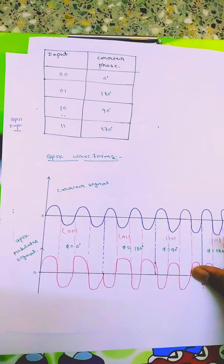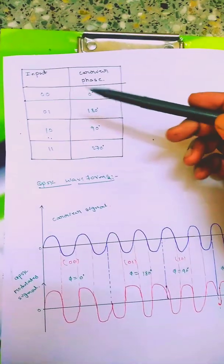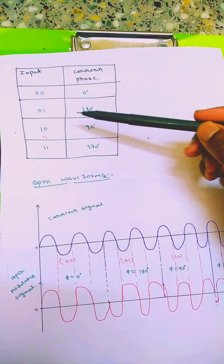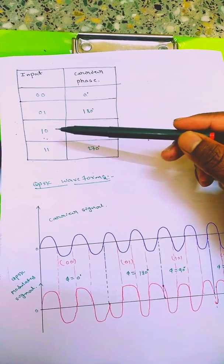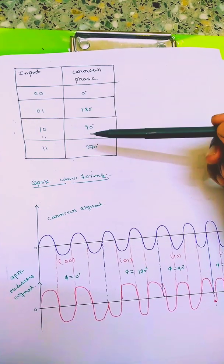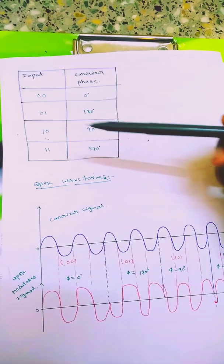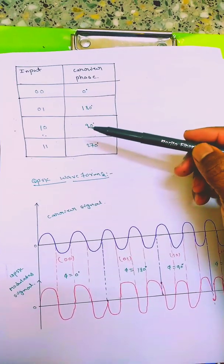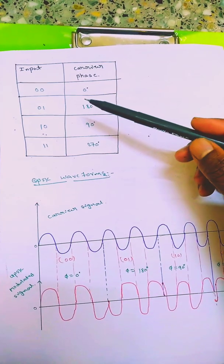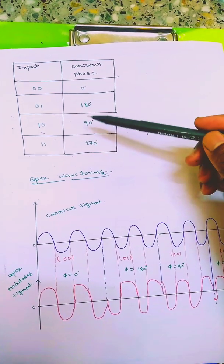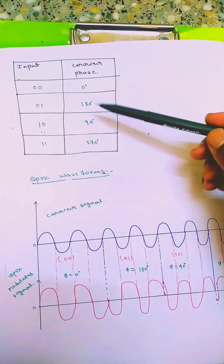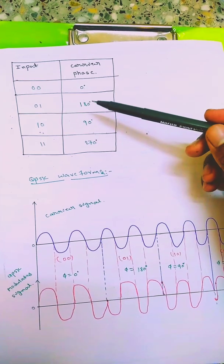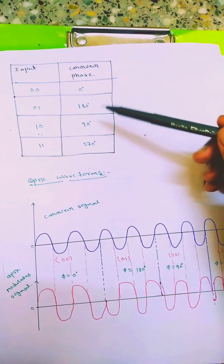So how it works: if input is 00, carrier phase will be assigned 0 degree. If input is 01, carrier phase will be 180 degree. If input is 10, carrier phase will be 90 degree. If input is 11, carrier phase will be 270 degree. Depending on the algorithm you can change according to how you want to assign, but you have to assign identically, that is indistinguishably.